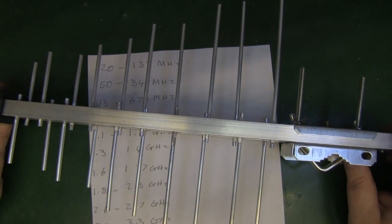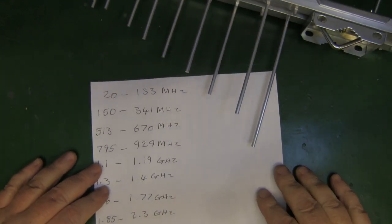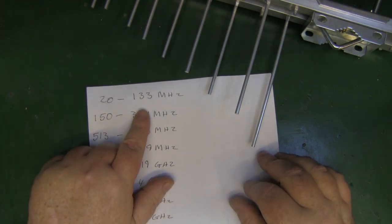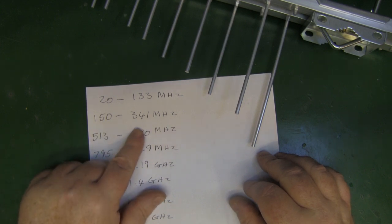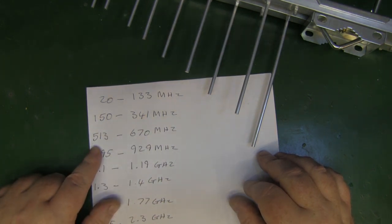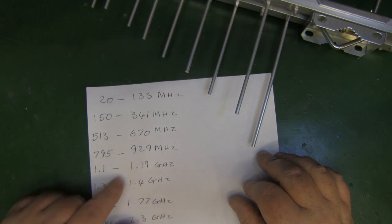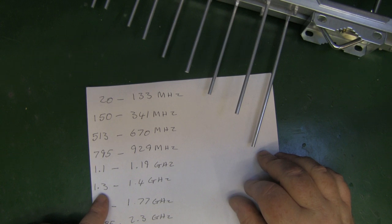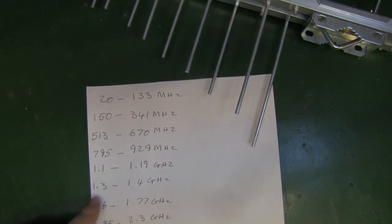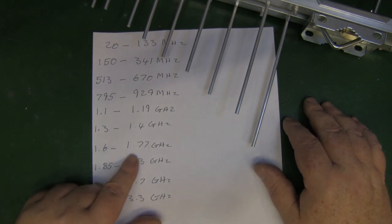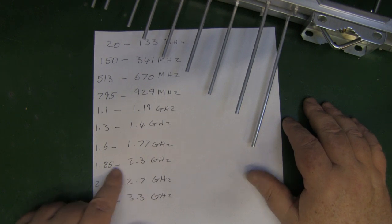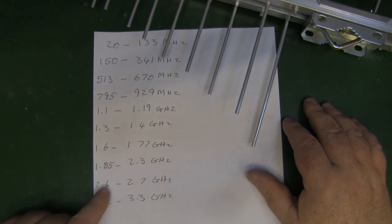This turned out to be quite a broadband antenna, so let's just have a quick look at the frequencies then. I found it worked best at 20 megahertz to 133 megahertz, then 150 to 341 megahertz, then 513 to 670 megahertz, 795 to 929, and then 1.1 gigahertz to 1.19 gigahertz, 1.3 gigahertz to 1.4 gigahertz, 1.6 gigahertz to 1.77, 1.85 to 2.3 gigahertz.